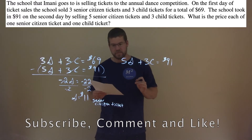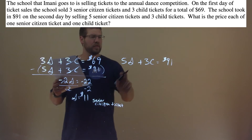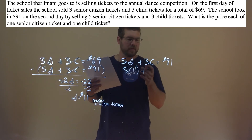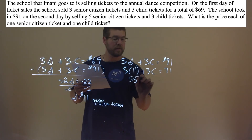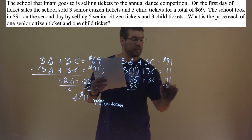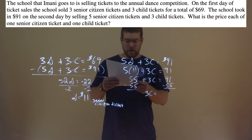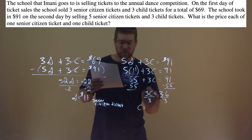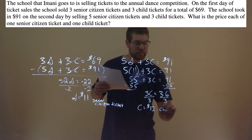Now we take that information and plug it into one of our equations to solve for the price of the child ticket. So 11 goes in for S in the second equation. 5 times 11 is 55, plus 3C equals 91. Subtract 55 from both sides, and 3C equals 91 minus 55, which is 36. Divide both sides by 3, and C equals 36 divided by 3, which is 12. That's $12, and that's the price of a child ticket.